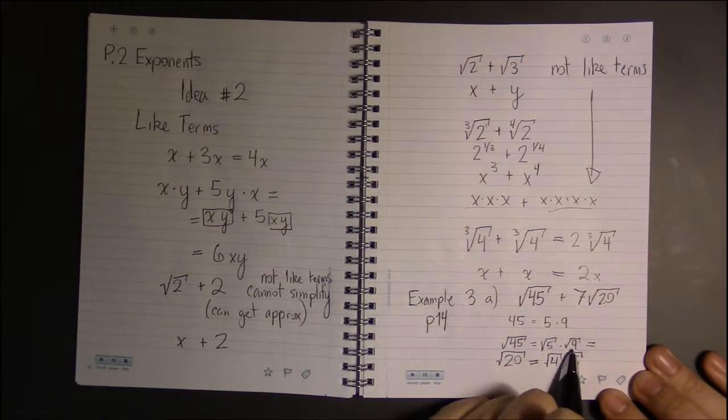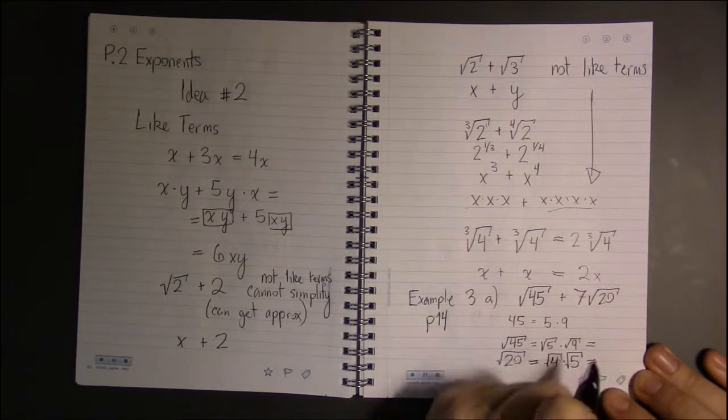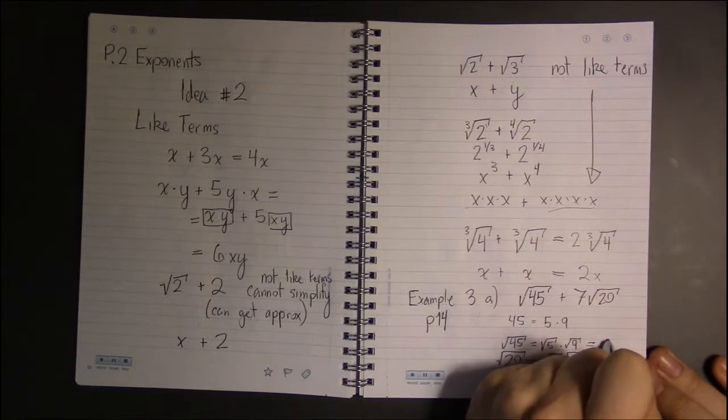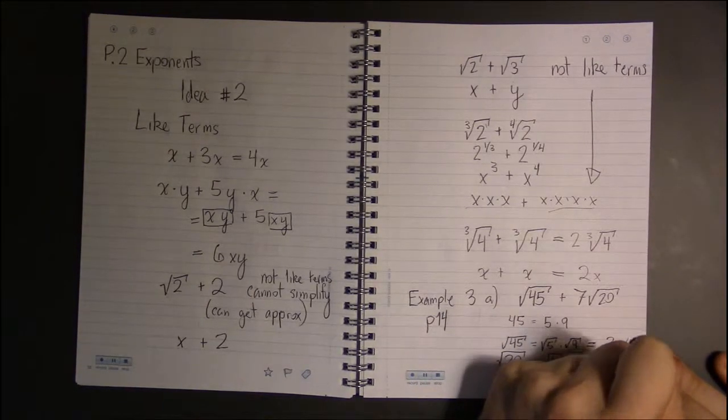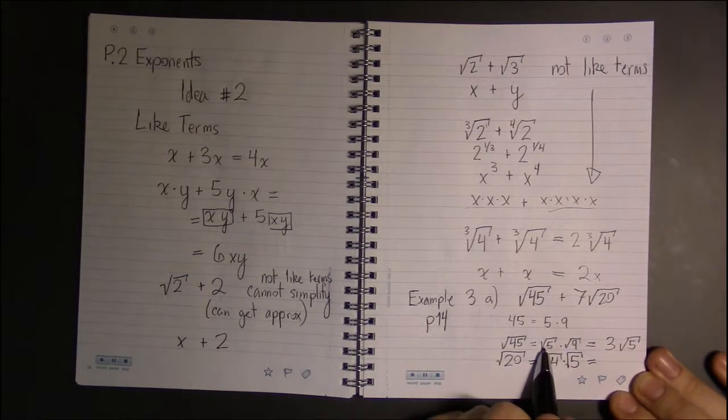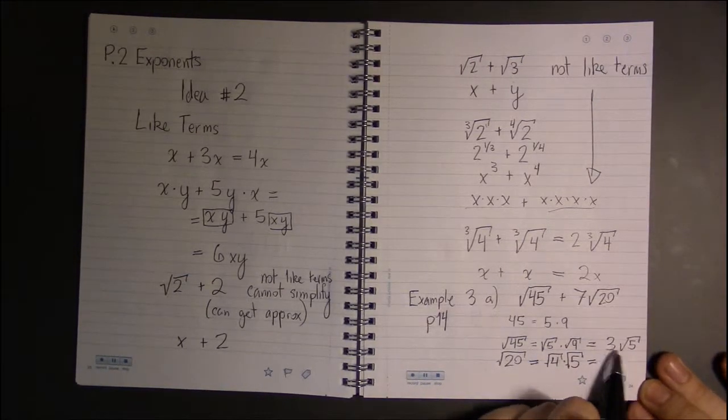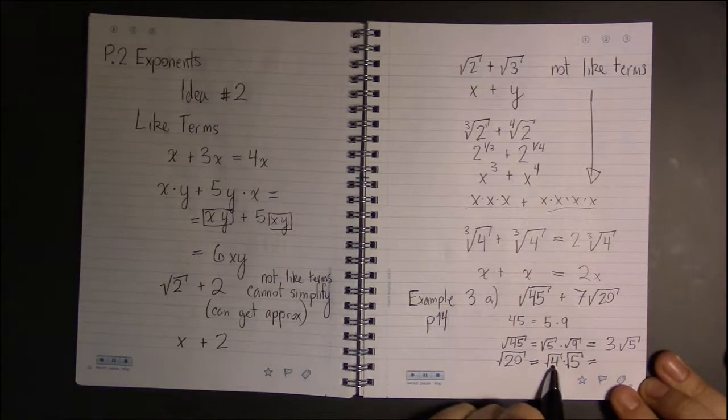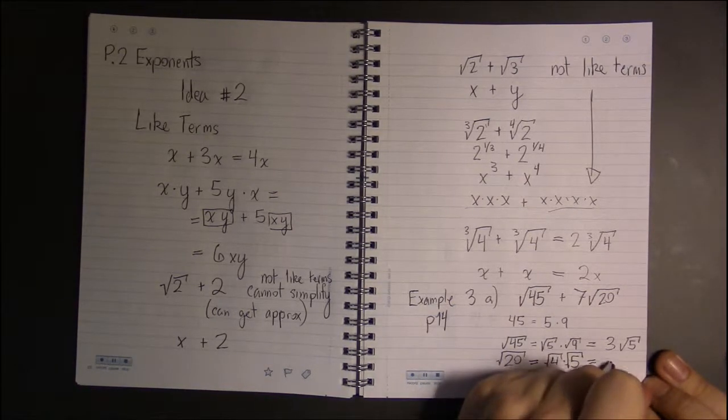And we're doing this because 9 has a nice square root. Square root of 9 is 3, so we have 3 times square root of 5 or 3 square roots of 5. Square root of 4 is nice, that's just 2.